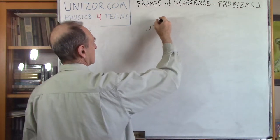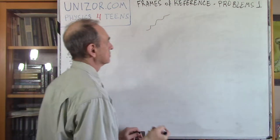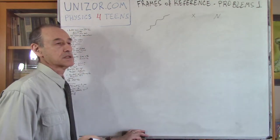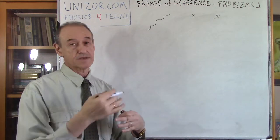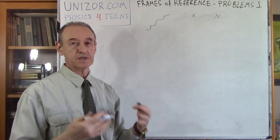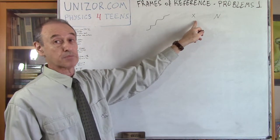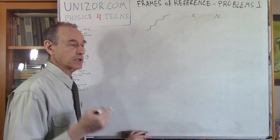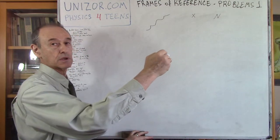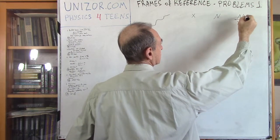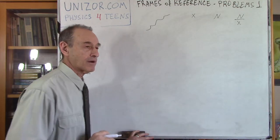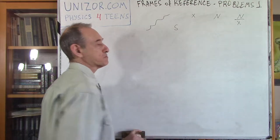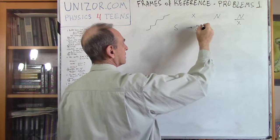Next we have an escalator which goes up with a certain speed. Let's consider the speed as x — the number of steps per second, since it's very convenient in this case to measure speed and distance in number of steps. The escalator has n steps total. A person going up on it counts the steps and got 24 steps.